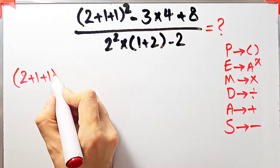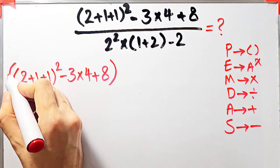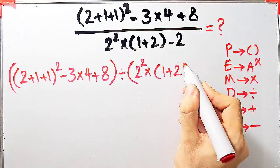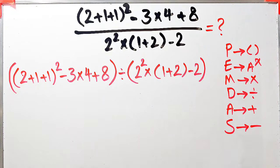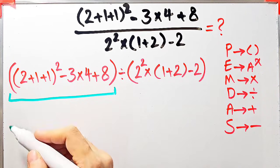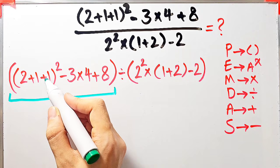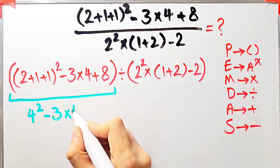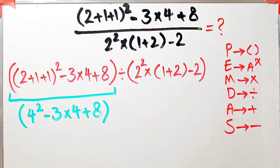In the numerator we have: open parenthesis 2 plus 1 plus 1 close parenthesis, all to the power of 2, minus 3 times 4, plus 8. In the denominator: 2 to the power of 2, times open parenthesis 1 plus 2 close parenthesis, minus 2. According to PEMDAS we first simplify the parentheses. Inside the numerator parentheses we have addition, exponent, subtraction, and multiplication. First, 2 plus 1 plus 1 equals 4. Now we have 4 to the power of 2, minus 3 times 4, plus 8.